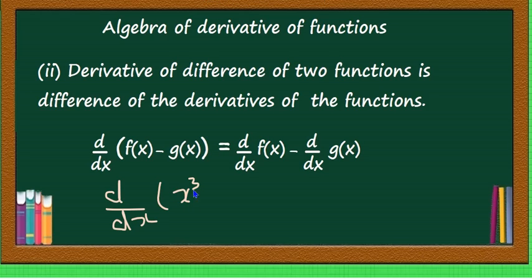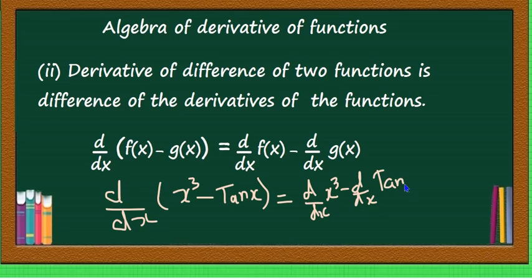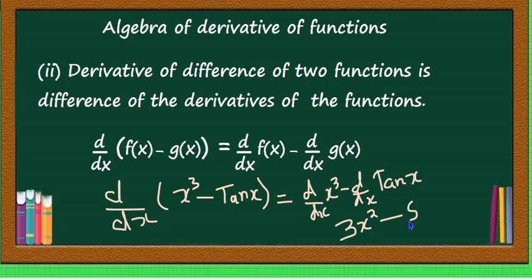For example, to find d by dx of x cube minus tan x, applying the rule gives: derivative of the first function minus derivative of the second function — that is, d by dx of x cube minus d by dx of tan x. What is d by dx of x cube? That is 3x square. And the derivative of tan x is sec square x. This is the answer.